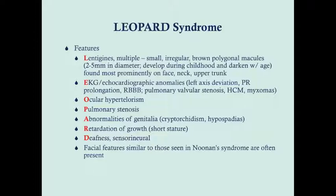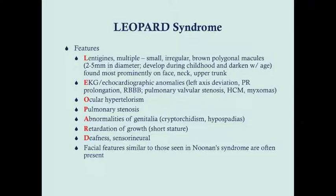The name LEOPARD is actually an acronym for the symptoms seen in this syndrome — named in the 1950s or 1960s, and that's why it's all in uppercase. The L stands for lentigines. The E stands for EKG or echocardiographic anomalies — things like left axis deviation, PR prolongation, or right bundle branch block. Similar to Noonan Syndrome, you can get pulmonary valve stenosis, which is actually the most common structural heart defect in Leopard Syndrome, just like in Noonan's.